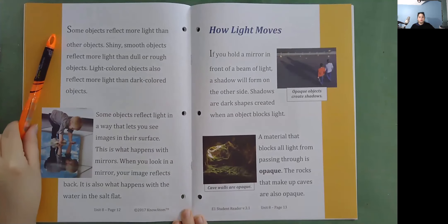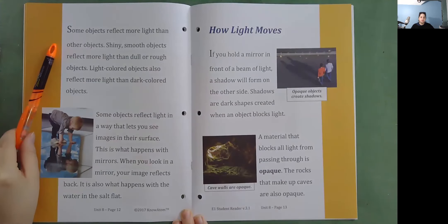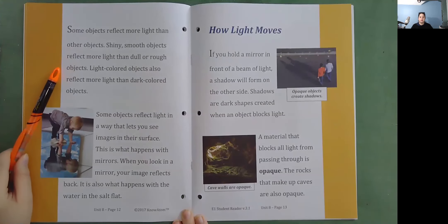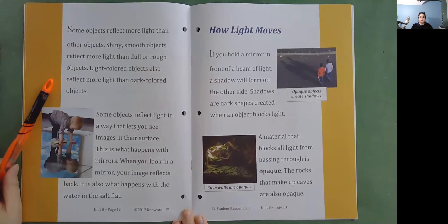Some objects reflect more light than other objects. Shiny, smooth objects reflect more light than dull or rough objects. Light colored objects also reflect more light than dark colored objects. Some objects reflect light in a way that lets you see images in their surface. This is what happens with mirrors. When you look in a mirror, your image reflects back. It is also what happens with the water in the salt flat.